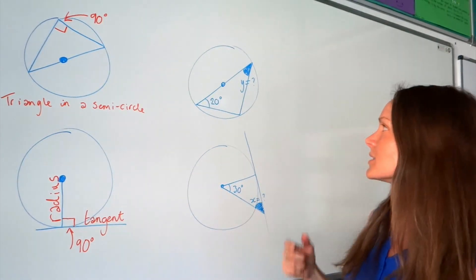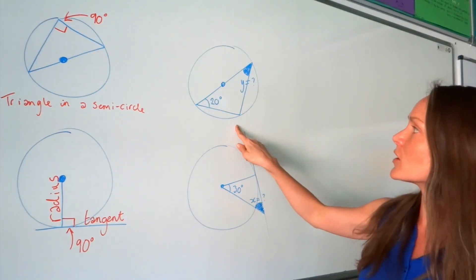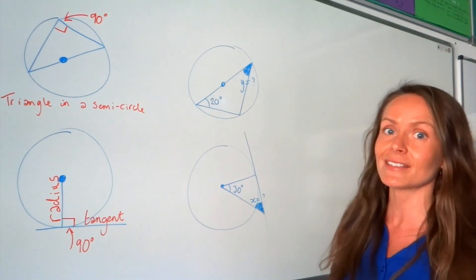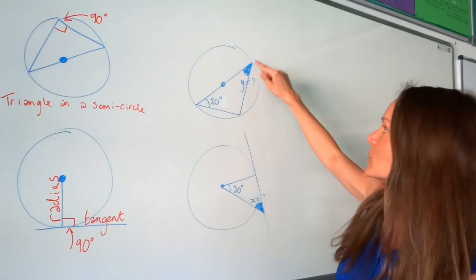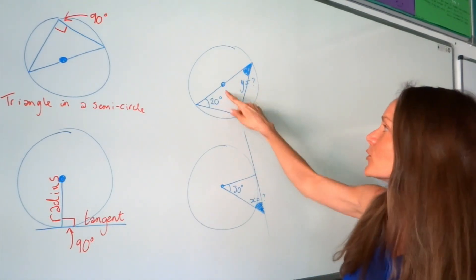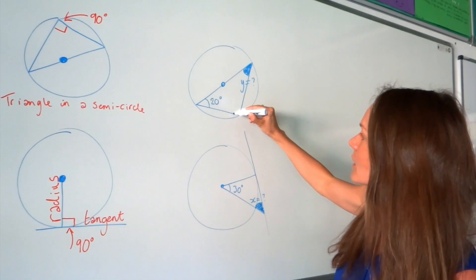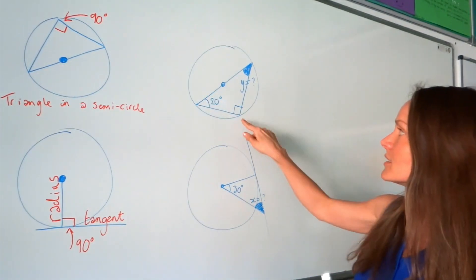So let's put those into practice. So you can see in the first one, again we've got a triangle in a semicircle. This is the diameter passing through the centre of the circle, which means this angle here is 90 degrees, this one.